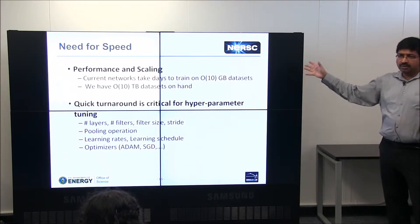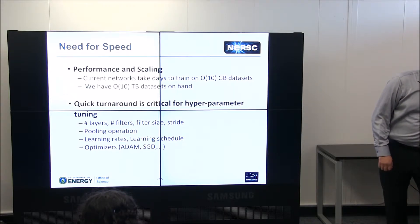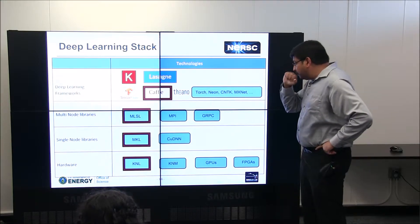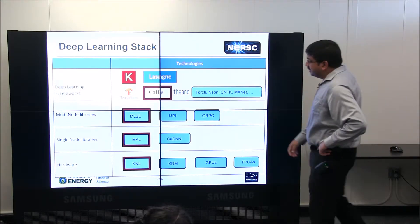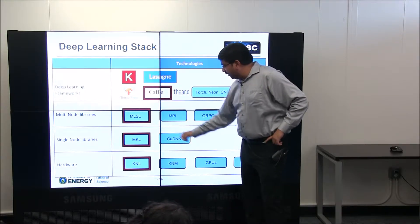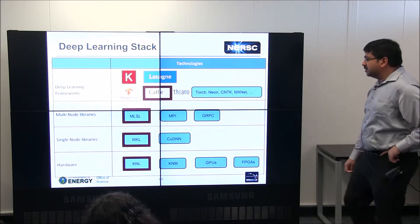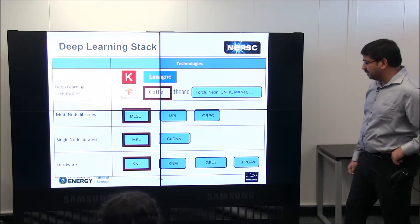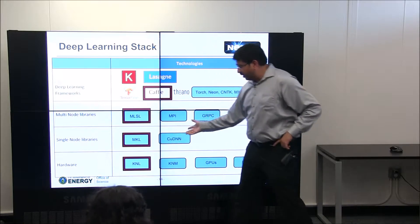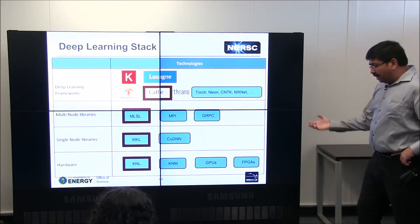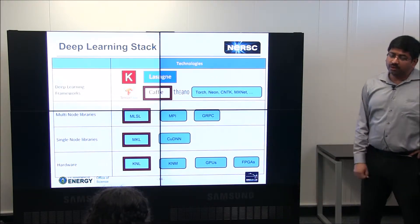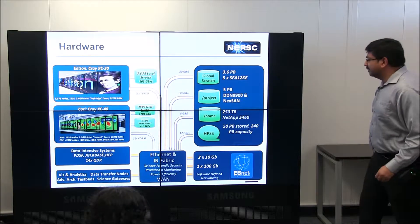This is a well-posed problem for computer scientists. The software stack we ended up using: we coded our semi-supervised architecture in Caffe, used Intel's new machine learning scalability library (MLSL) for multi-node communications, and MKL for single-node optimization — analogous to cuDNN. Our hardware is Knights Landing; we are not using GPUs, which are more conventionally used for deep learning, but Knights Landing instead.